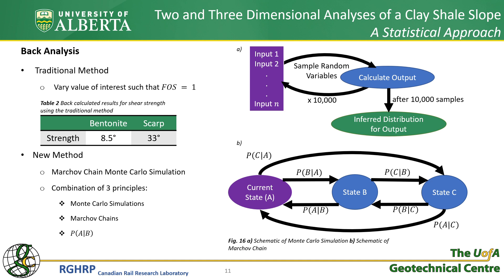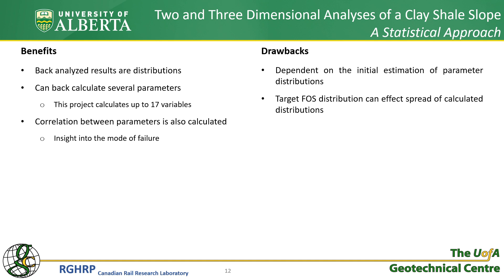In terms of the conditional probability — probability of A given B — in our context, A is the distribution of the strength parameters and B is the factor of safety. So in plain English, what is the distribution of strength given that the landslide failed? Benefits of this method include that the results of the back analysis are distributions as opposed to deterministic values. Also, several values can be back calculated at once — in this project we use up to 17 parameters — and the correlation can be inferred between strength parameters, which can give insight into the mechanism of failure.